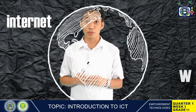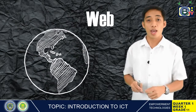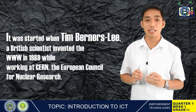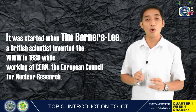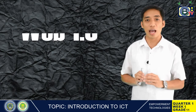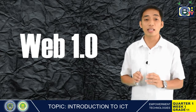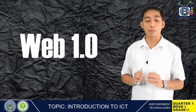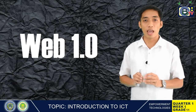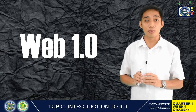Let's take a look at the evolution of the World Wide Web. The World Wide Web dramatically evolved as the years passed by. It was started when Tim Berners-Lee, a British scientist, invented the World Wide Web in the year 1989 while working at CERN, also known as the European Council for Nuclear Research. Web 1.0 is also known as the static web because the page is stationary where the contents are fixed and cannot be manipulated by anyone except the administrator. Visitors of these webpages can only read the content, which is why it is also known as the flat page.